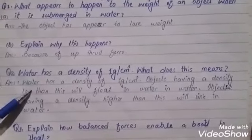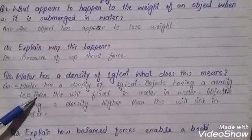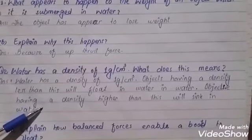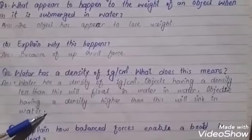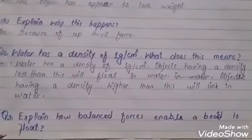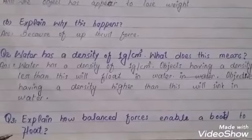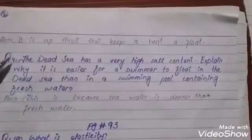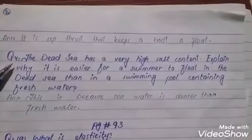Objects with density less than this will float in water, and objects having density higher than this will sink in water. Third question: Explain how balanced forces enable a boat to float. Answer: It is upthrust that keeps a boat afloat.